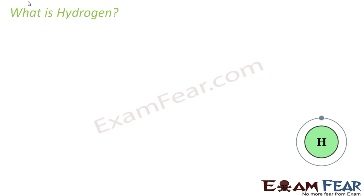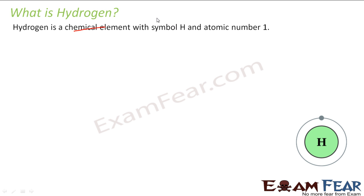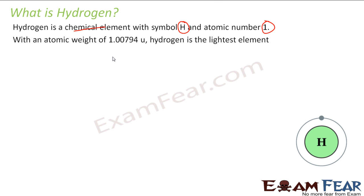Let's start with the first topic: what is hydrogen? Hydrogen is a chemical element with symbol H, atomic number 1, and it is the first element in the periodic table. It is the lightest element, with an atomic weight of 1.00794 atomic mass units.